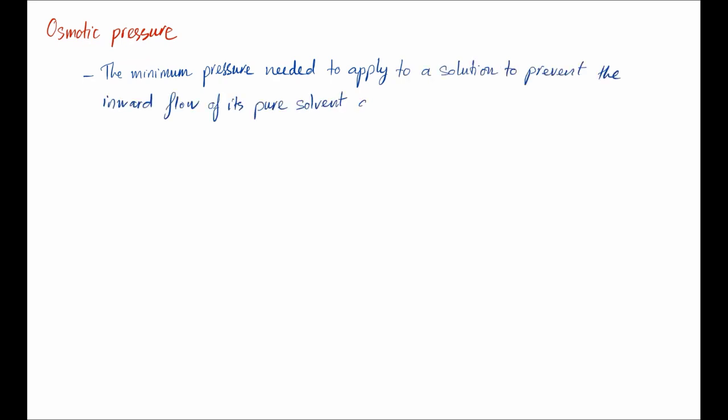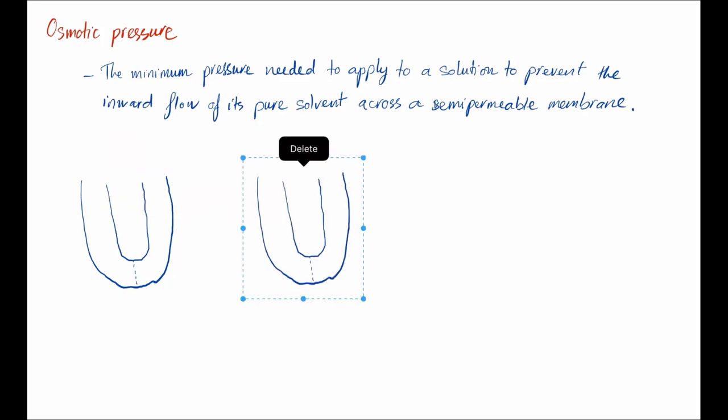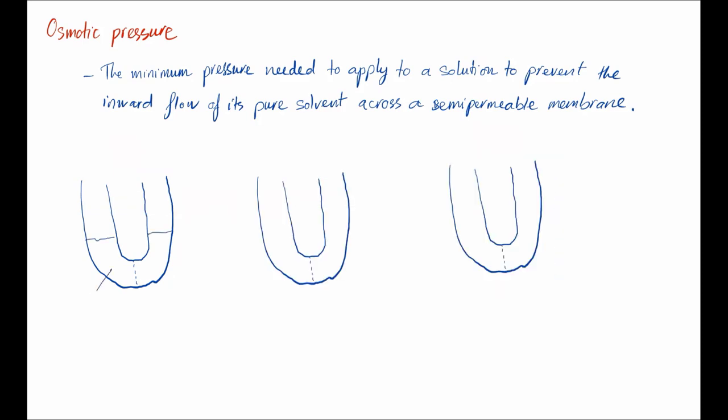Osmotic pressure. What's osmotic pressure? Osmotic pressure is the minimum pressure that stops the inward flow of its pure solvent across a semi-permeable membrane. Now let's look at this tube, which has a semi-permeable membrane in the middle. Let's put a bunch of water in there. When nothing is happening, the water will diffuse across the membrane and maintain an equal water level on both sides.